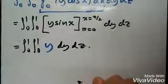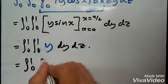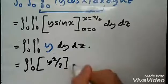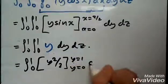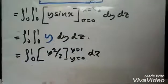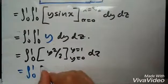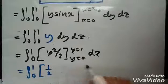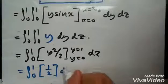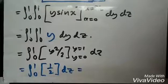Now integrate y with respect to y. We get y squared over two, with limits y equals zero to y equals one, and dz remaining. Replacing y equals one gives one half; replacing y equals zero gives zero. So we're left with one half dz.